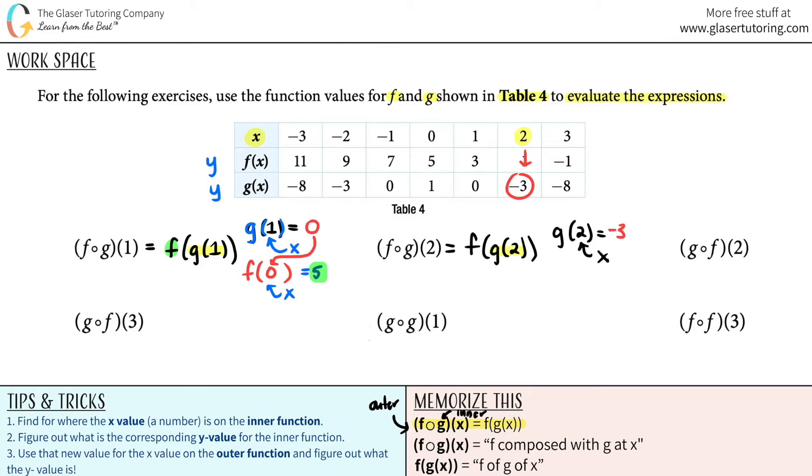Now I use that for my outer function. My outer function was the f function. F of negative 3. You use the answer from before. Negative 3 is over here. Go down to the f function. It would be 11. And that's your answer here. I think you guys are getting the hang of it. What do you think? Next one.